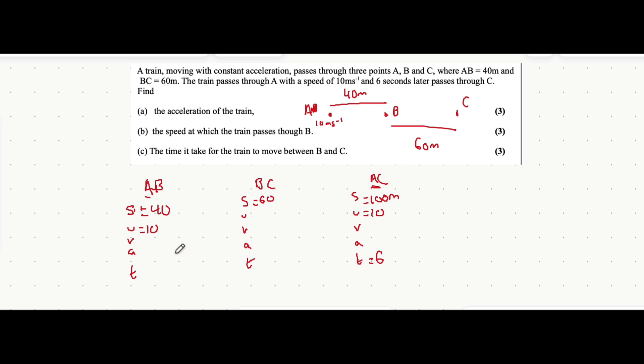It's asking for the acceleration. We don't have enough variables in the first two sections, but in section A to C we have three known variables and one unknown. Laying it all out helps you realize the best plan of action. Let's do part a in black.